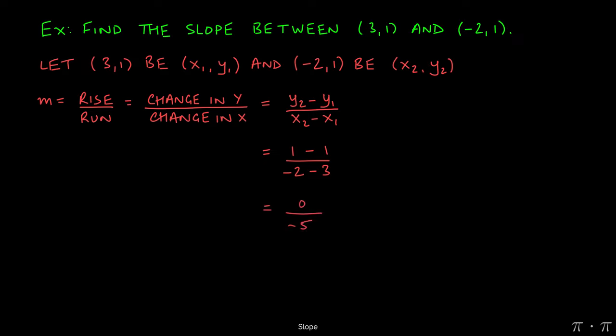Now if we simplify this, we get 0 from the numerator, 1 minus 1, and we get negative 5 from the denominator, negative 2 minus 3.